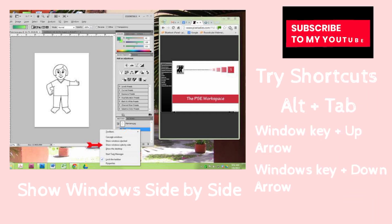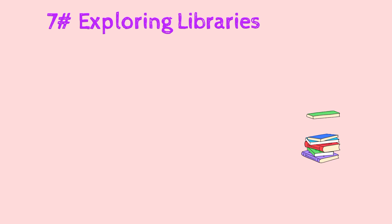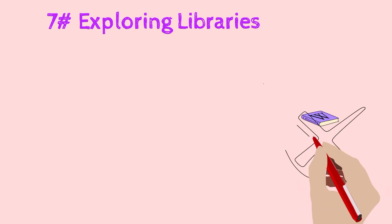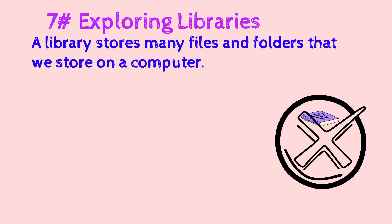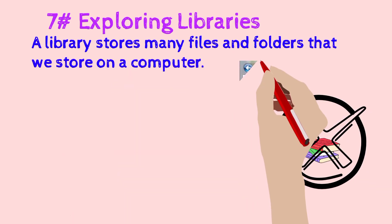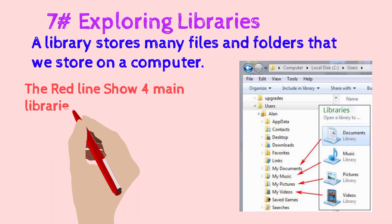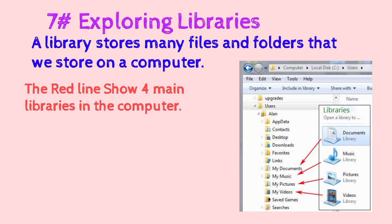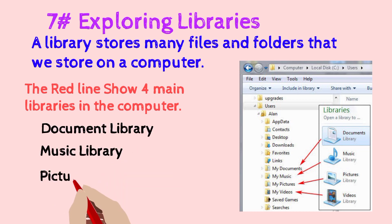The seventh feature is exploring libraries. In this context, a library does not mean a book library — it stores many files and folders that we save on a computer. As shown in the diagram, there are four libraries: number one is the document library, number two is the music library, number three is the picture library, and number four is the video library.